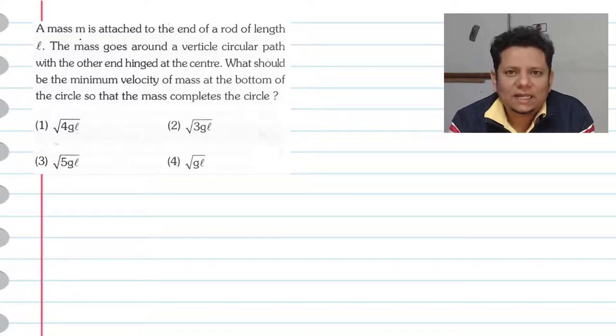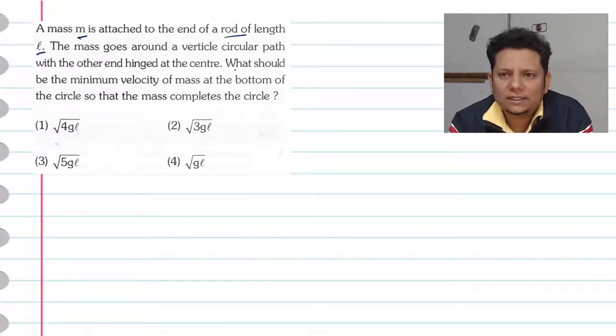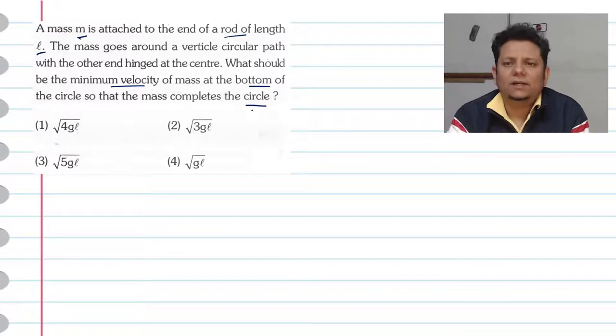Next question. A mass M is attached to the end of a rod of length L. The mass goes round a vertical circular path with the other end hinged at the center. What should be the minimum velocity of the mass at the bottom of the circle so that the mass completes the vertical circle?